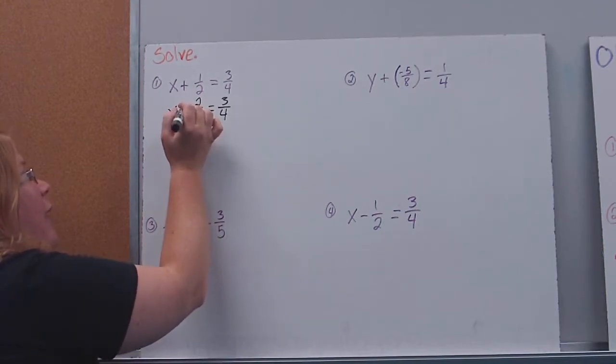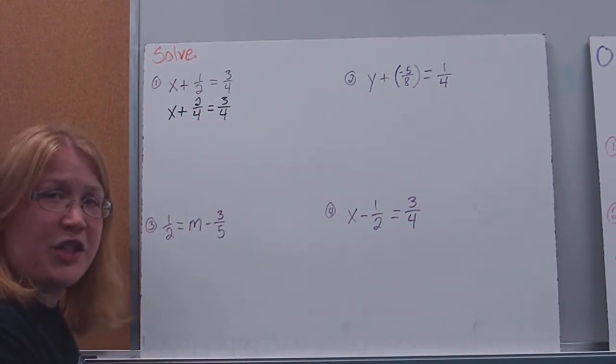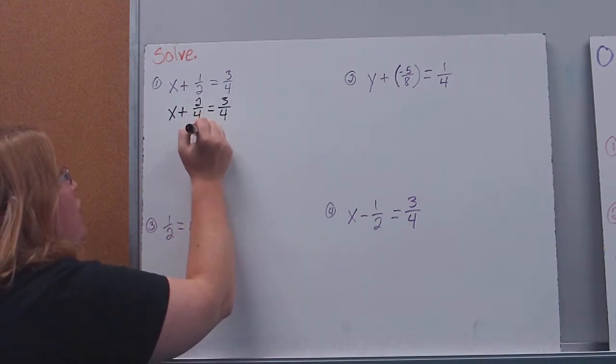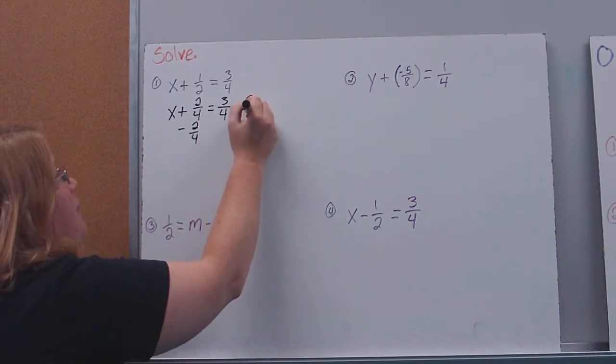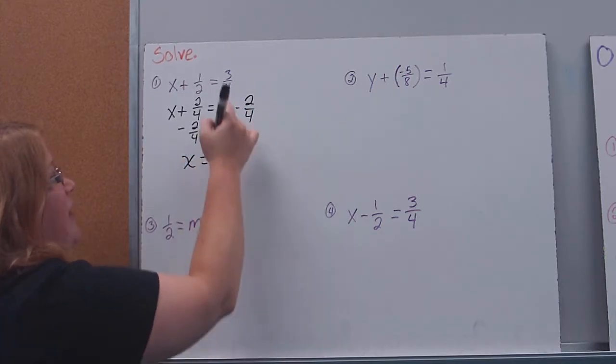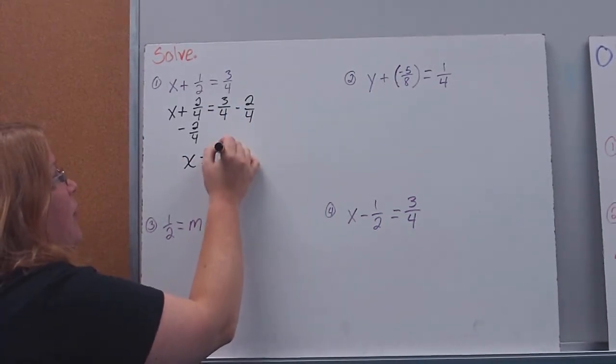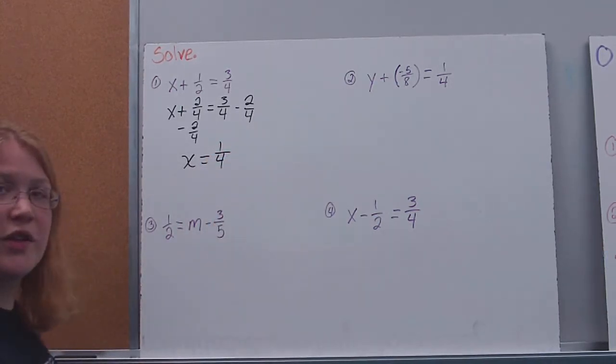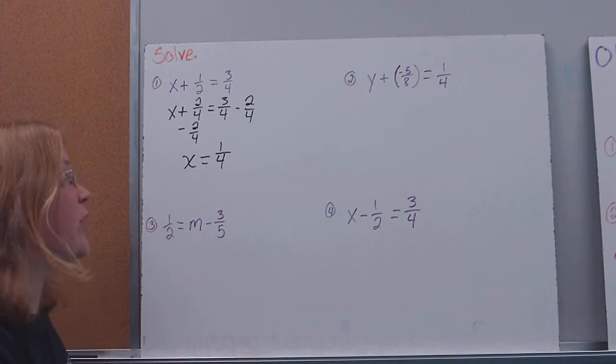Okay, now you'll notice that the operation that's happening to my variable is addition, so we want to use the inverse operation. So I'm going to subtract two-fourths from both sides. So on this side, I'm left with x. Three-quarters minus two-fourths leaves me with one-fourth, so my answer is one-fourth. It's in its simplest form. We don't need to reduce it.